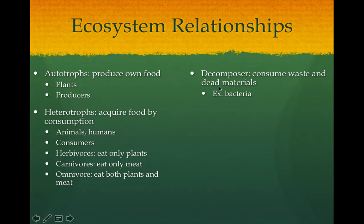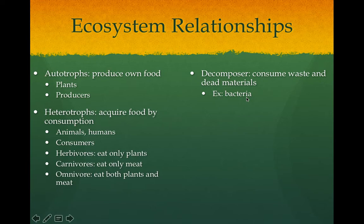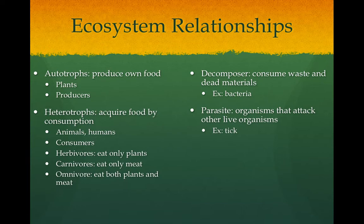Then we talk about the decomposers. If something decomposes, it rots away and becomes part of the earth. Decomposers are organisms that consume waste and dead materials. Things like bacteria are a good example, as well as fungi. If you see mushrooms growing in your yard, they like to consume waste from other organisms and dead material to recycle it back to nature. Certain types of organisms are called parasites — they live within or on other species and get their nutrition from them. A tick on a human or dog is an example of a parasite. It doesn't usually kill the host, but it consumes its nutrition from that organism and harms them in some way.